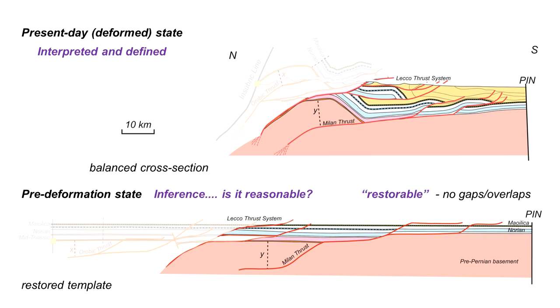By that I mean have we been able to make it through the simple restoration of the structures that we see in the top diagram. If we can, this section is said to be restorable and the stratigraphy that we showed laid out below has no gaps or overlaps.